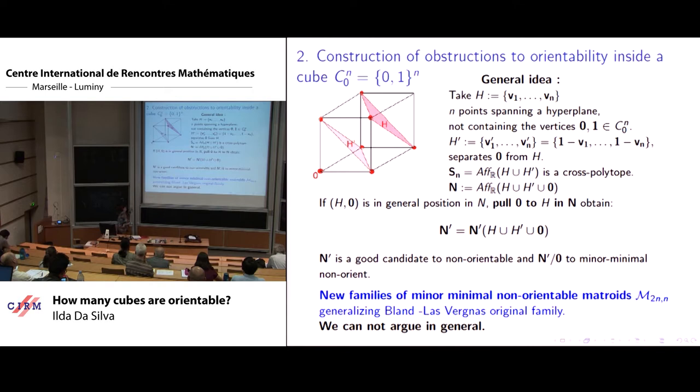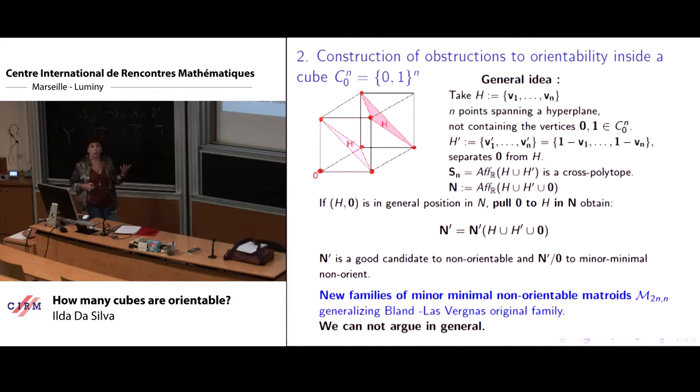And actually, we did extend, we obtained new families of minor minimal non-orientable matroids, all obtained like this, with two n points and rank N, which generalize the first example of an infinite family of non-orientable matroids, proving that orientability could not be characterized in terms of excluded minors. Here I put we cannot argue in general. In the paper, I suggest a general construction, but cannot argue in general that it works always. But explicit examples are calculated for every N. So really new families for every N.